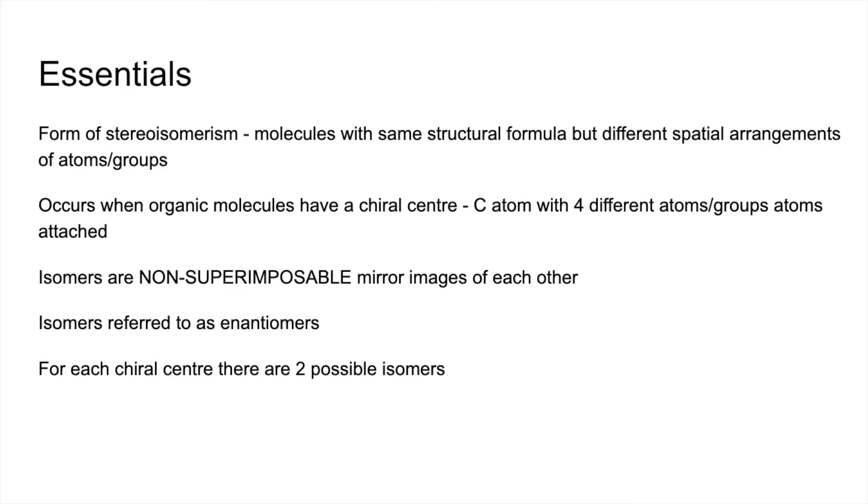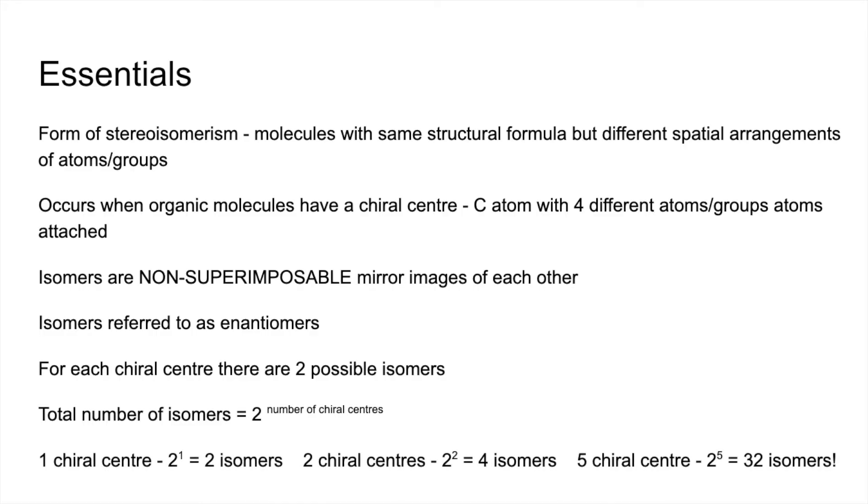For each chiral centre there are two possible isomers, so the total number of isomers is two raised to the power of the number of chiral centres. So obviously one chiral centre, two to the power one is two isomers. Two chiral centres gives you four and five chiral centres would give you 32 possible isomers.